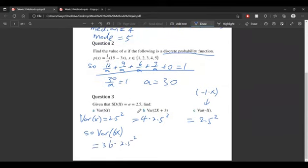Finally, for question three, we can use our variance formulas. Standard deviation is 2.5, so variance is 2.5 squared. Variance of 6X is—don't forget it's squared—the coefficient squared, so 6 times 6, which is 36, times 2.5 squared.